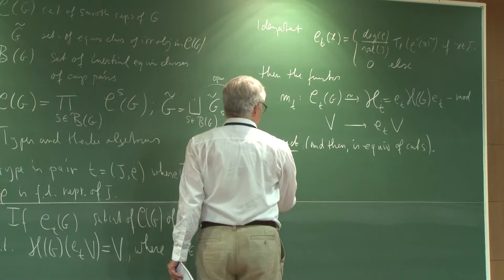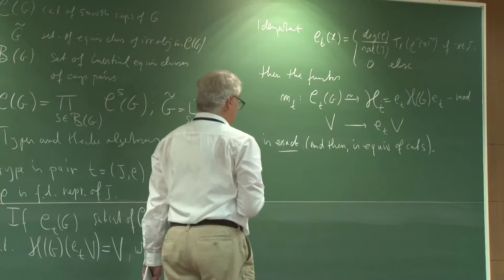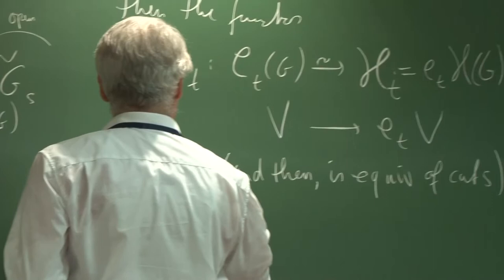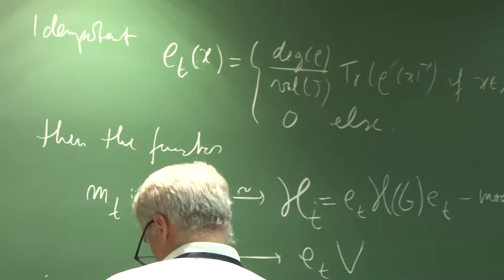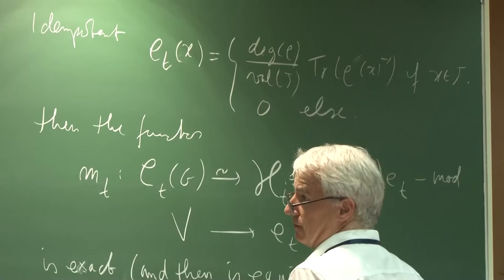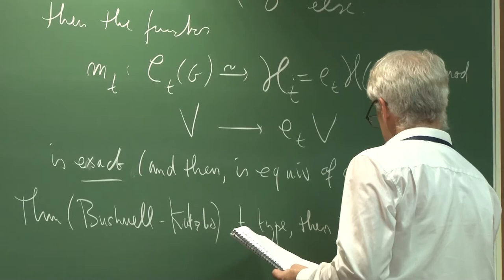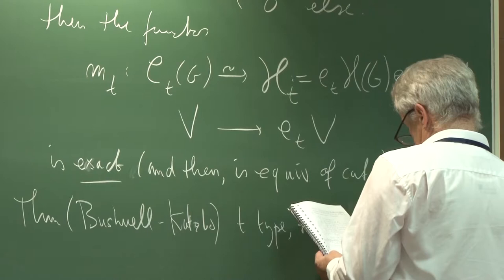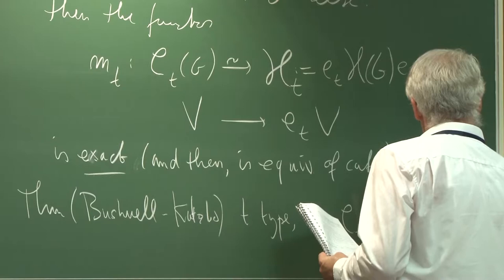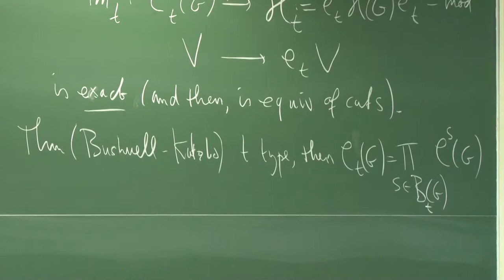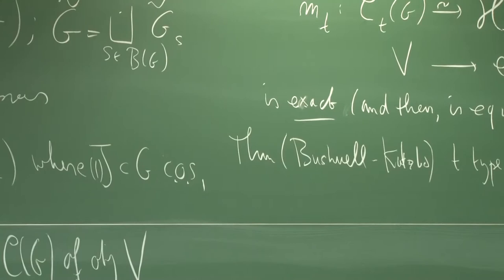The theory — I think due to Bushnell-Kutzko — is that if T is a type, then this category is a finite product of Bernstein components, a product over S in B(G) of the Bernstein components C_S(G) in the notation that was given. So for each type you have an algebra H_T, the Hecke algebra of the type.